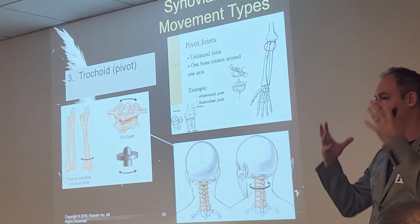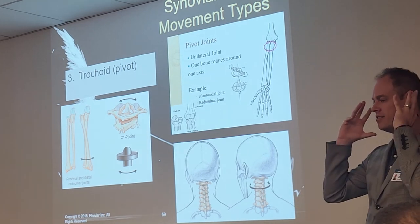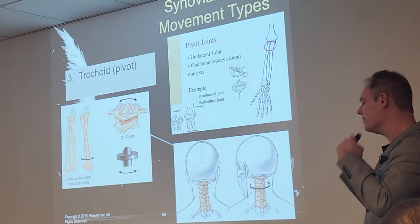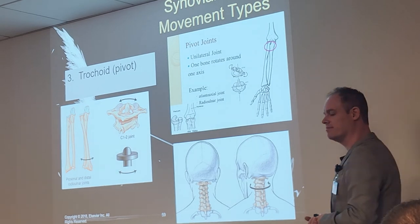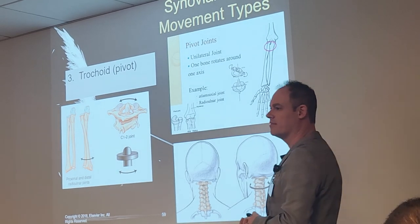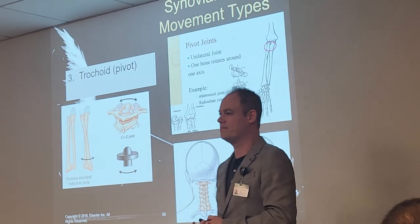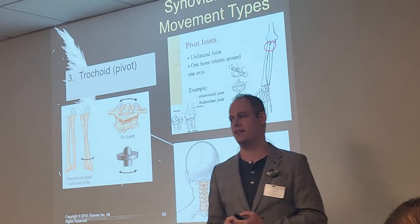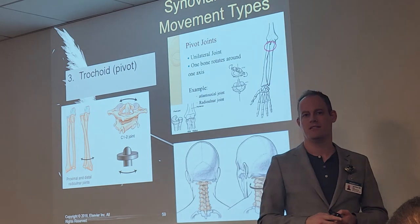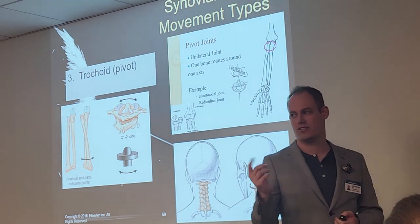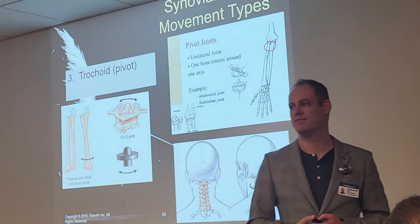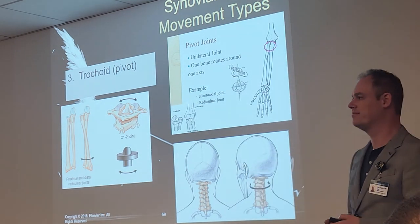They'll put on a metal device called a halo to stabilize the head in those cases. It's like a ring around the head. They take many x-rays to document and monitor the separation.